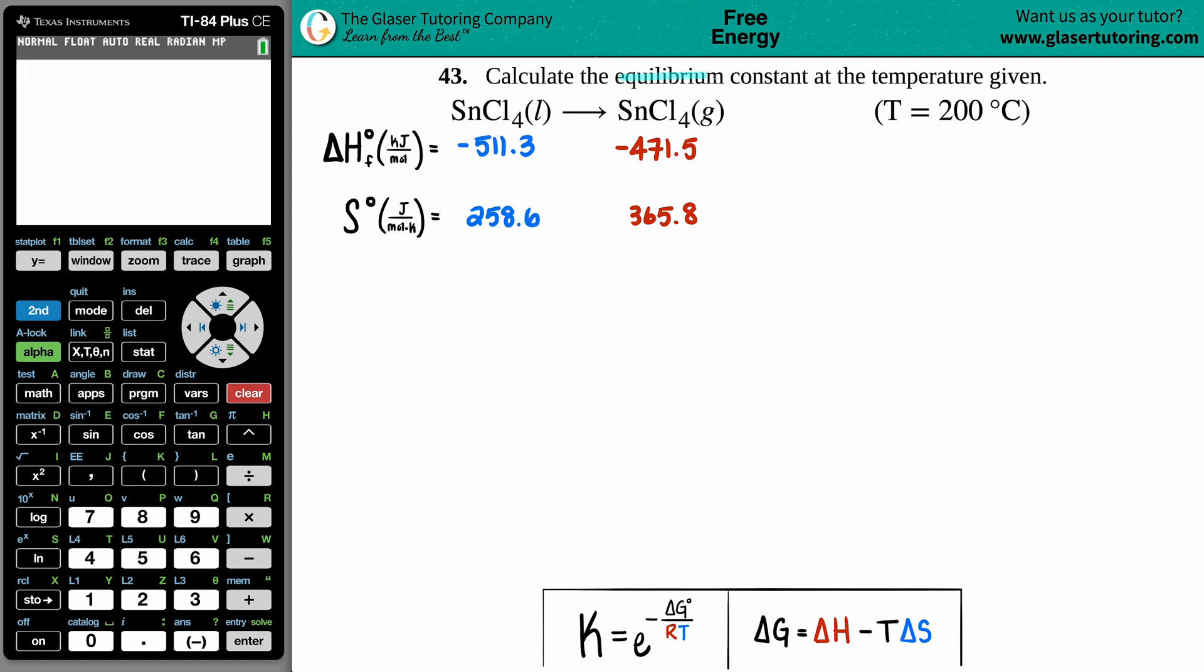Number 43: Calculate the equilibrium constant at the temperature given. We have SnCl₄ liquid which will yield SnCl₄ gas, so it looks like we're vaporizing SnCl₄ at this really high temperature of 200 degrees Celsius. From this information we're trying to find an equilibrium constant—a capital K value. There's Kₐ, Kb, Kc, Keq, Kp, and the list goes on. Does it really matter which K we're finding? I could probably guess this is going to be a Kp value because I see gases here, and usually with gases come pressures. But there's only one formula that really links an equilibrium constant with temperature, and that's the formula I have written down here, so let's pull this up.